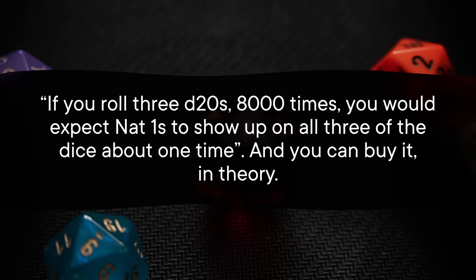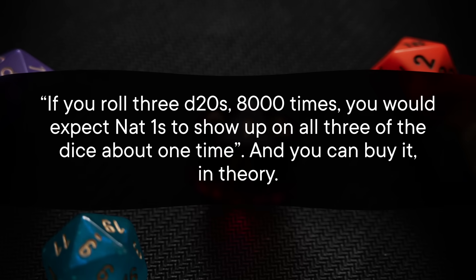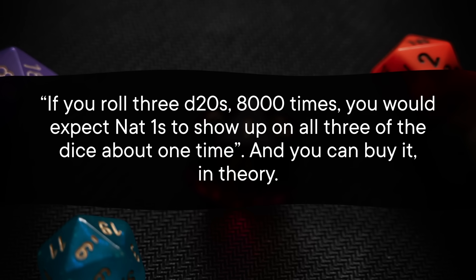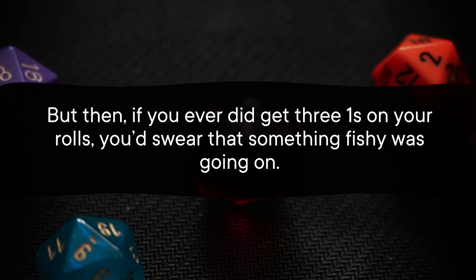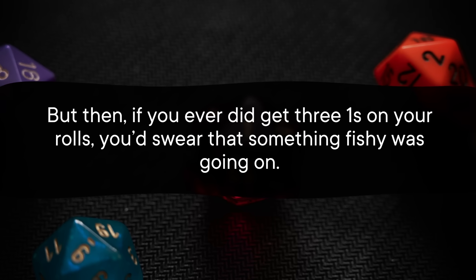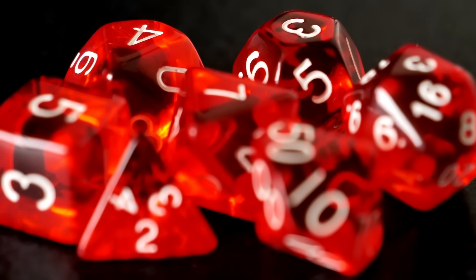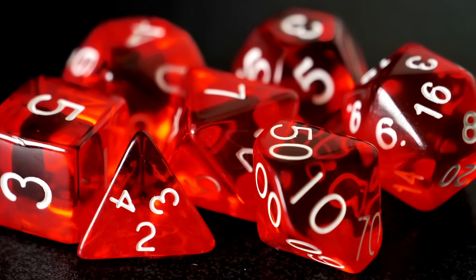Human psychology just does not do well with true randomness. I can show you the math and explain: if you roll three d20s 8,000 times, you would expect nat 1s to show up on all three dice about one time. And you can buy that in theory. But then if you ever did get three 1s on your rolls, you would swear that something fishy was going on. And if the dice really are putting a dampener on the D&D storytelling experience, a good DM will fudge things for the sake of having fun with their friends.